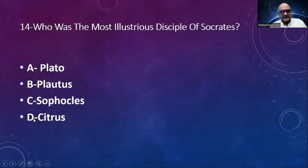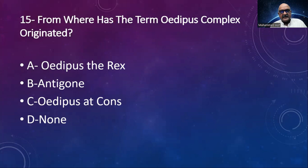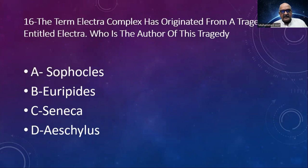From where did the term Oedipus complex originate? Options: Oedipus the Rex, Antigone, Oedipus at Colonus, none. The correct answer is Oedipus the Rex. Next: The term Electra complex originated from a tragedy entitled Electra. Who is the author of this tragedy? Options: Sophocles, Euripides, Seneca, Aeschylus. The correct answer is Sophocles.